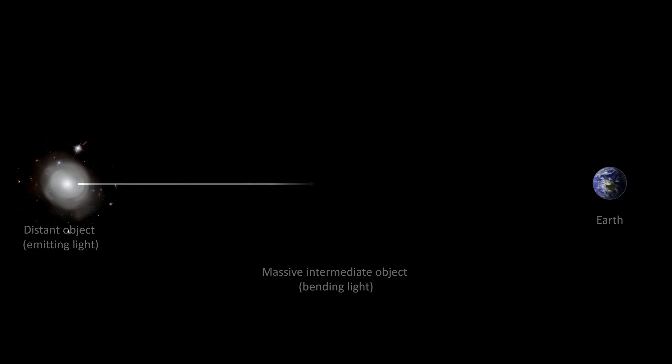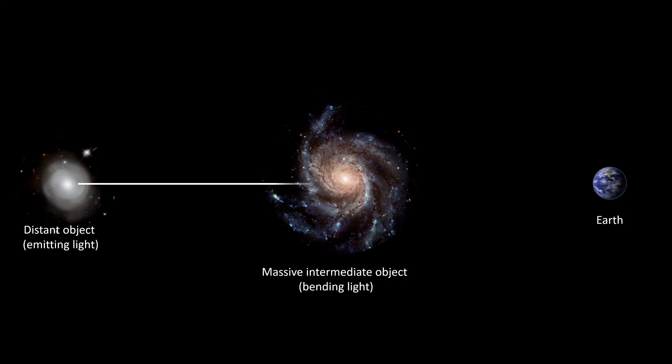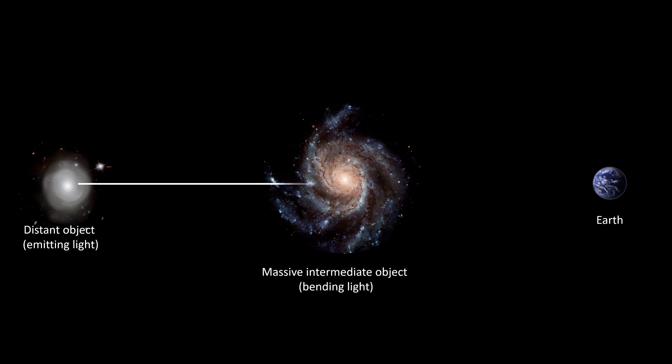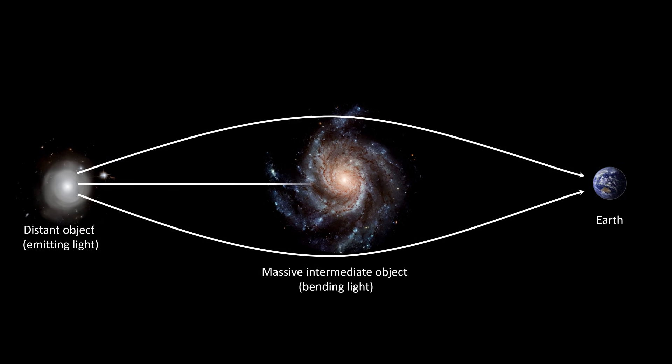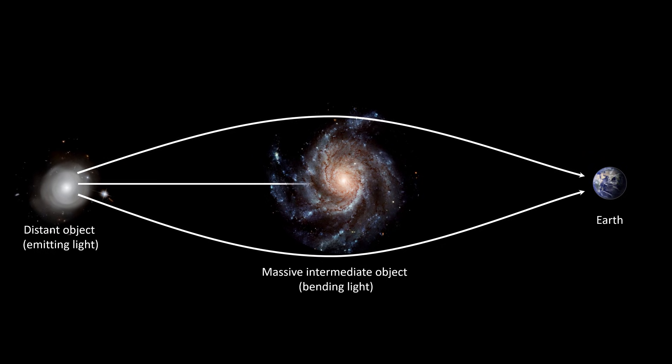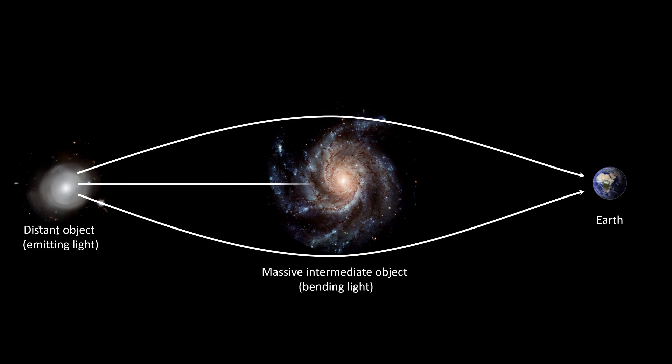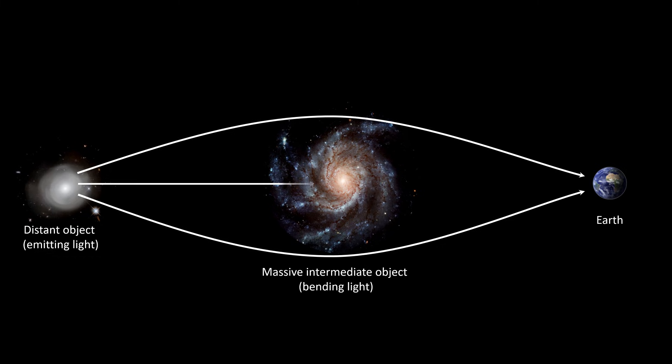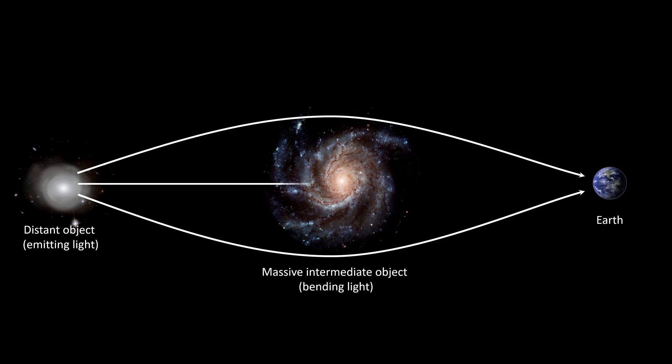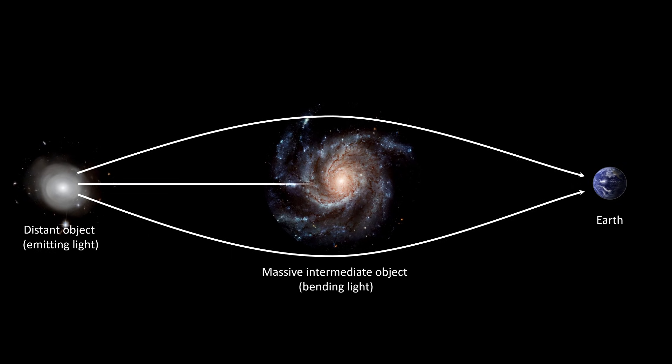This light can, for example, not reach us directly because of absorption of the light by an object in between, like a large galaxy, but we can still observe it because it's bent around the intermediate object due to a strong gravitational field, and this allows part of the light to still reach us. So this light is not traveling in a straight line, and only light emitted at very specific angles by this far away object will reach us.